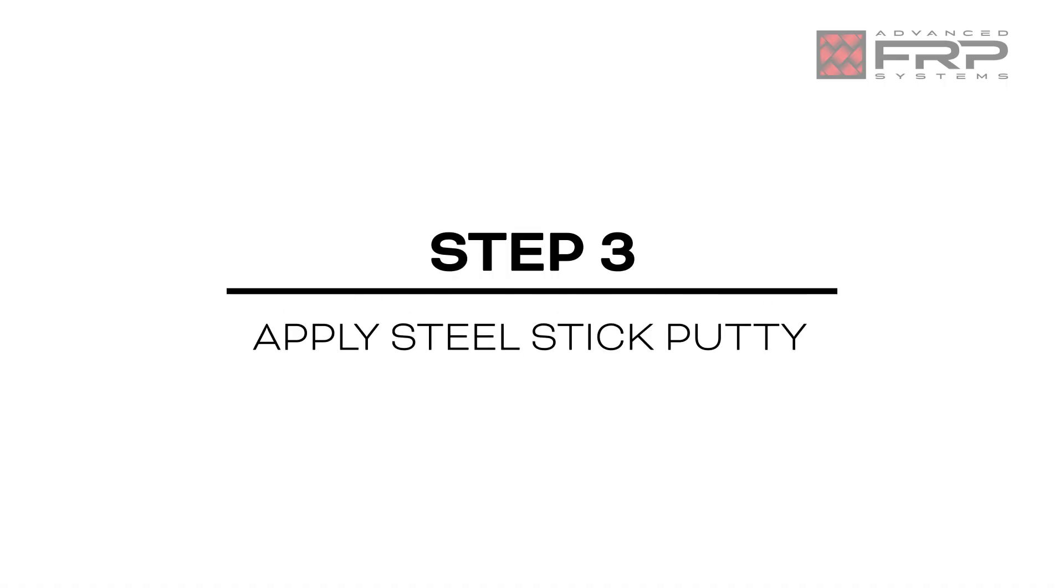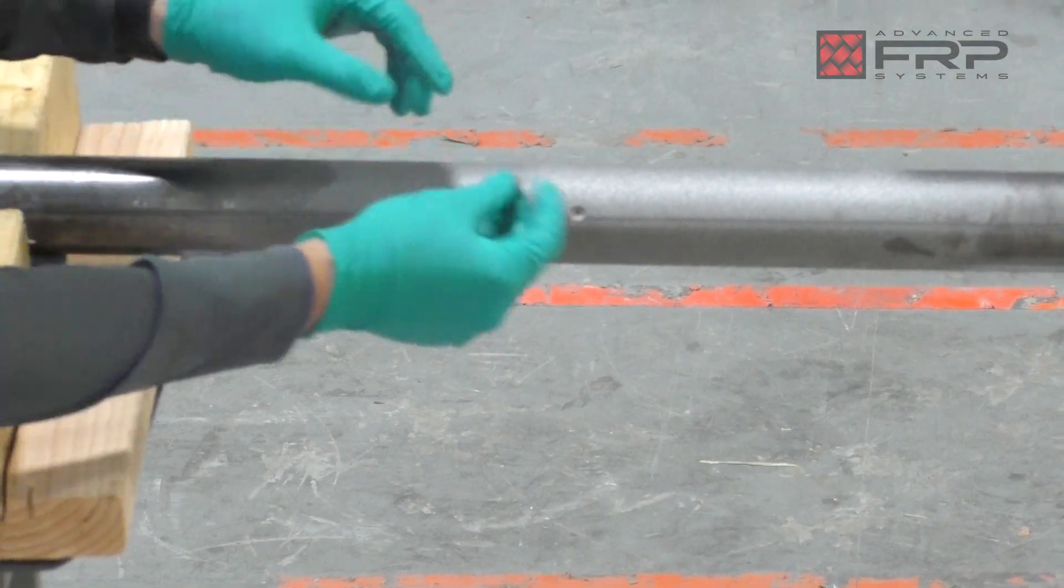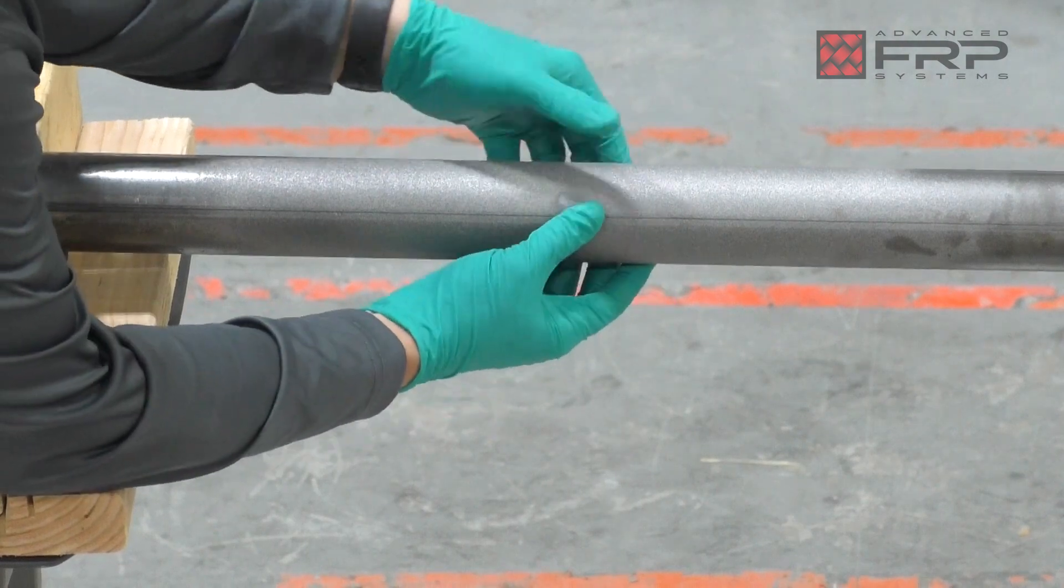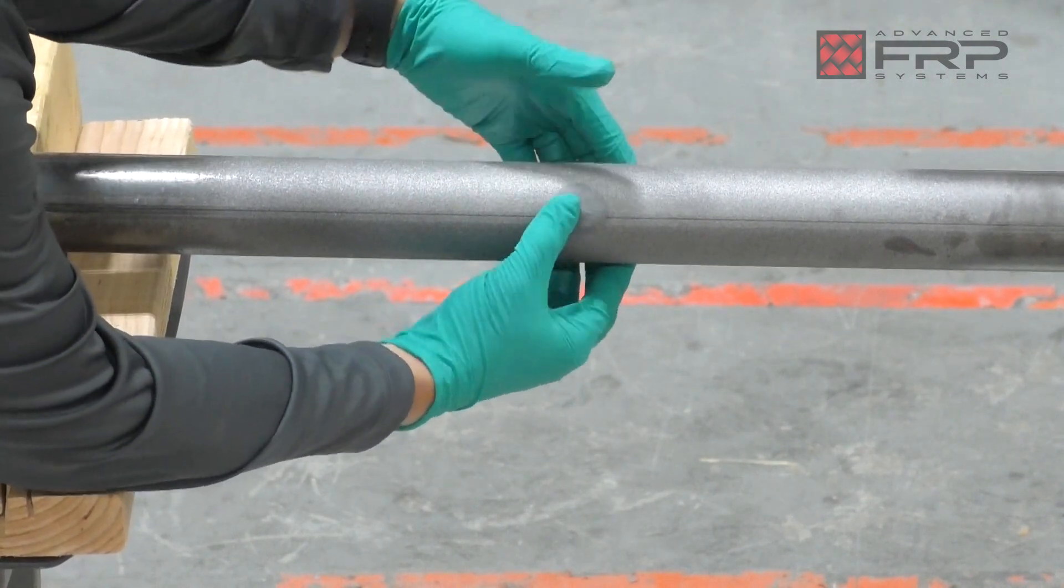Take enough repair putty to fill the repair area and smooth the repair putty over the circumference of the pipe. Cure for a minimum of five minutes before applying the FRP211-HT Saturant as a primer.